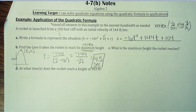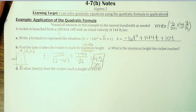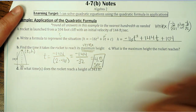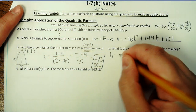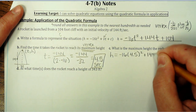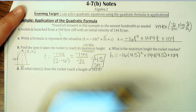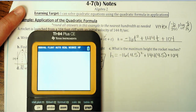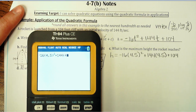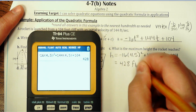To get the actual height, you know the time it's going to take — 4.5 seconds. To get the height, we're just going to plug it in. So the height equals negative 16 times 4.5 squared, plus 144 times 4.5 seconds, plus the initial height of 104. I'm going to lay my calculator here so you guys can see: negative 16 times 4.5 squared, plus 144 times 4.5, plus 104. The maximum height is 428 feet.